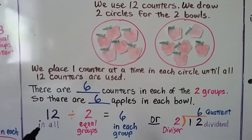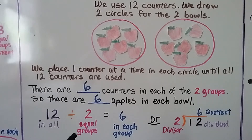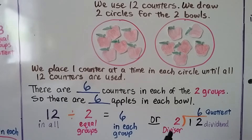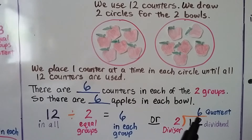12 in all divided into 2 equal groups is equal to 6 in each group. We can also write it with the division bracket. 12 is our dividend — that's how many we have in all. 2 is our divisor — that's how many equal groups we're going to have. And 6 is our quotient — that's how many are in each group.